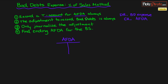Rule two: the adjustment to record Bad Debt is always debit Bad Debt Expense and credit AFDA. That's because expenses, to increase them, we always debit them. Contra Asset Accounts, to increase them, we always credit them. And the adjustment is the estimate of the uncollectibles for the receivables.